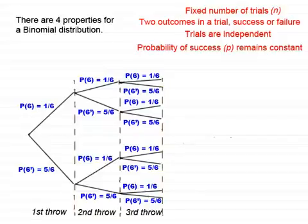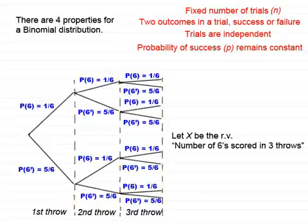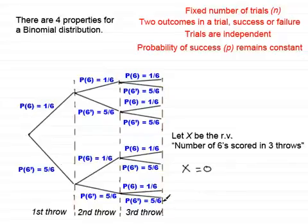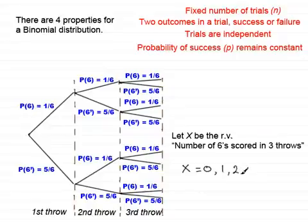When we have a binomial distribution, we define a random variable X — the number of sixes scored in these three throws. That random variable X could be zero: no sixes, going down the path where I get not-a-six on all three throws. It could be one six, scored in many ways — for example, on the first throw only, or the first and third but not second. I could also score two sixes or three sixes, but certainly not four. So X takes the values 0, 1, 2, and 3.